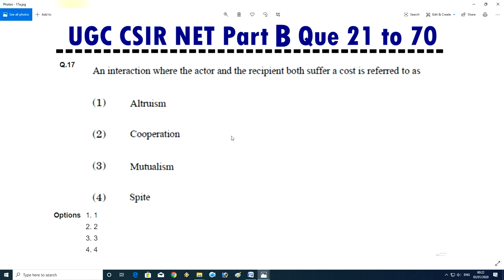Question No.17 - An interaction where the actor or recipient both suffer cost is referred as altruism, cooperation, mutualism, or spite. Answer will be spite D, means 4.